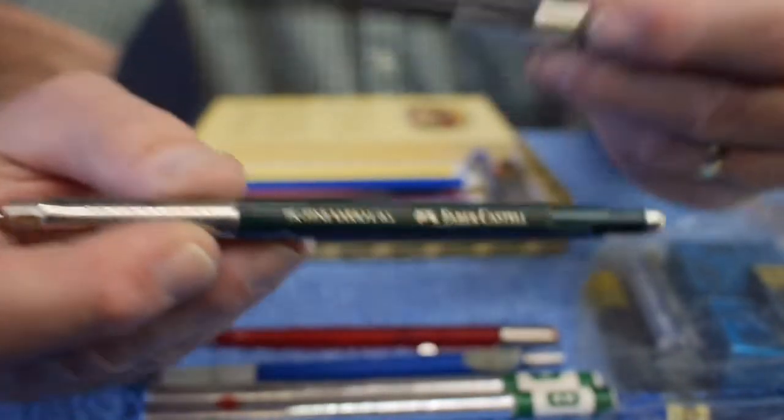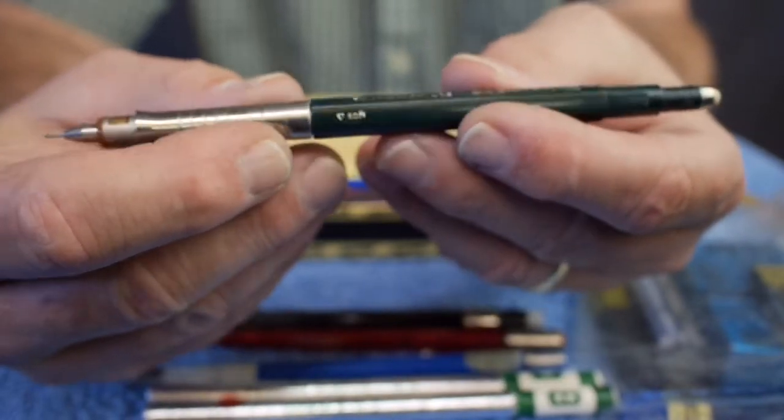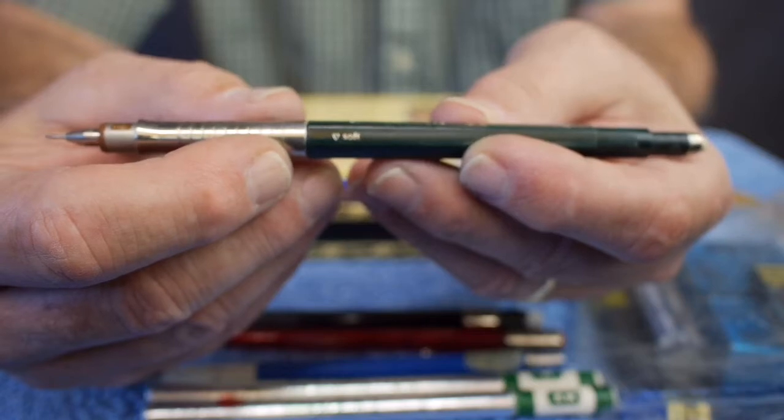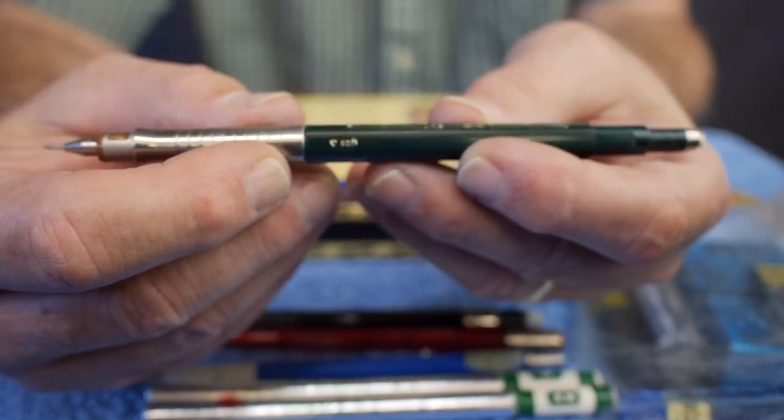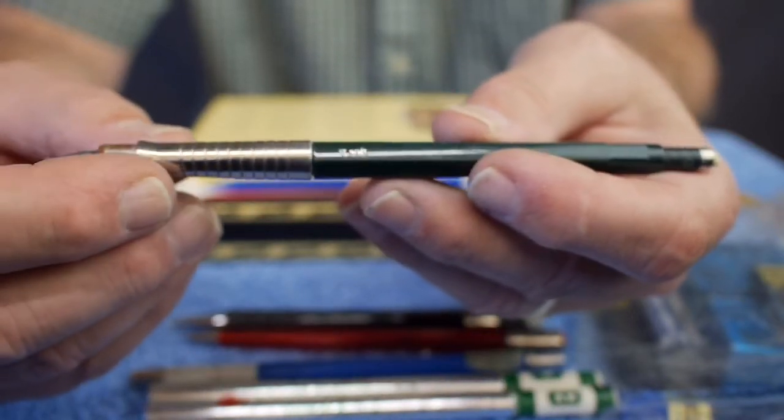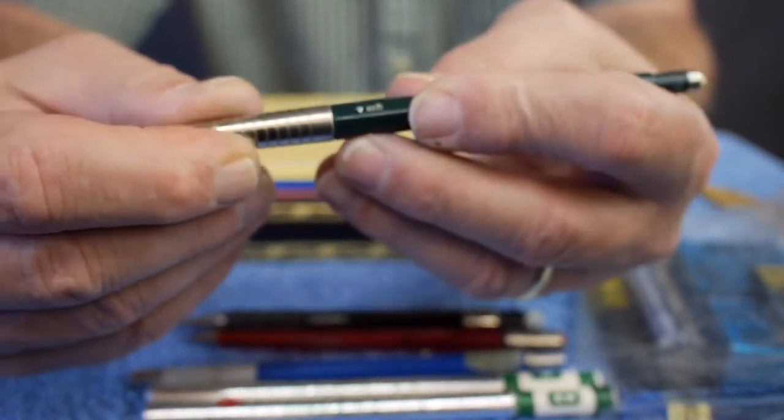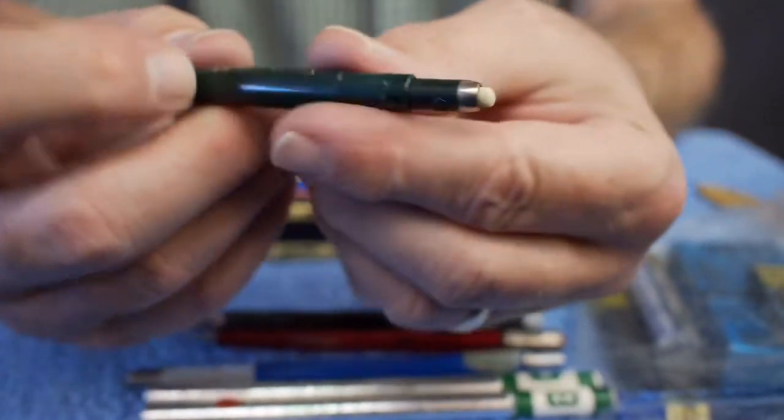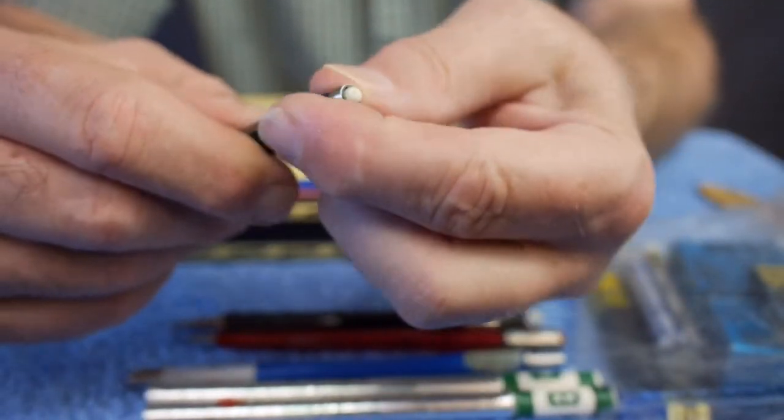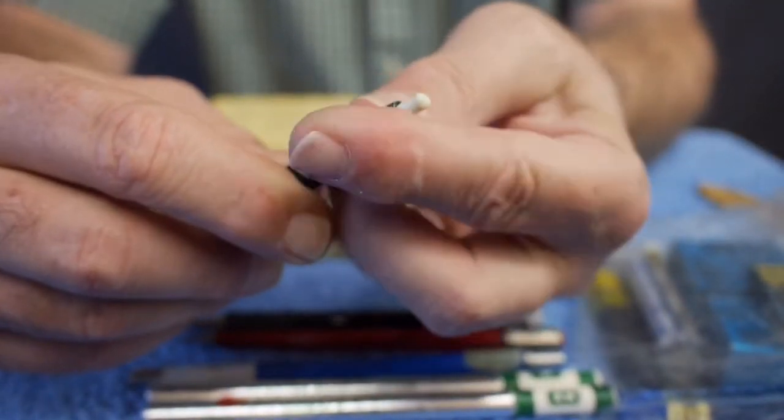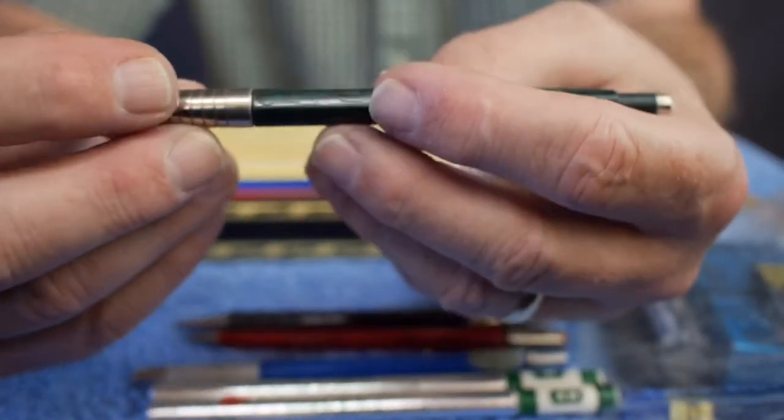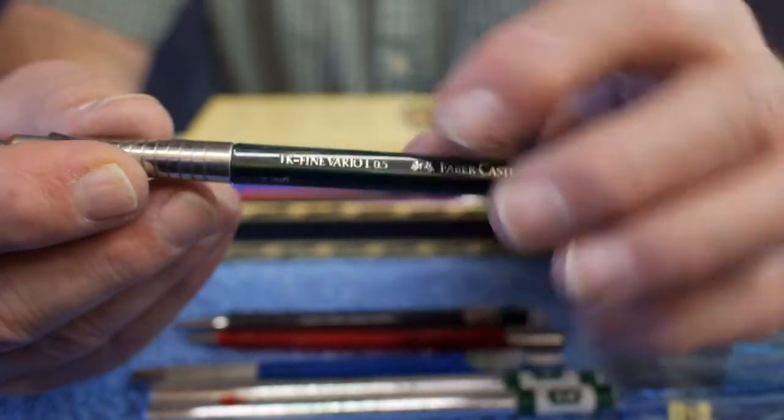Sometime a few years after I got this Pentel, I found at Pen & Pad in Albuquerque this wonderful Faber-Castell TK Fine Vario L 0.5 mechanical pencil for 0.5 millimeter leads. It has several different features. Starting at the back, it has a small size eraser that you can twist to advance it. And there's plenty of eraser in there.